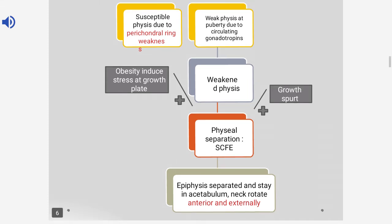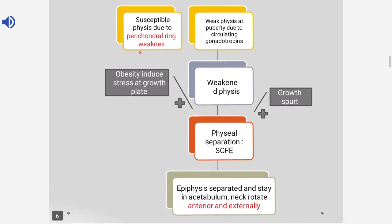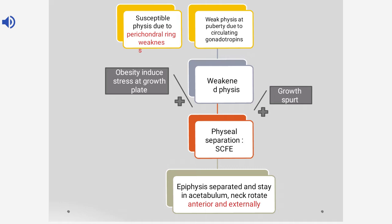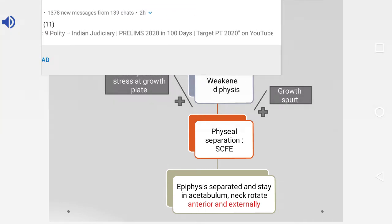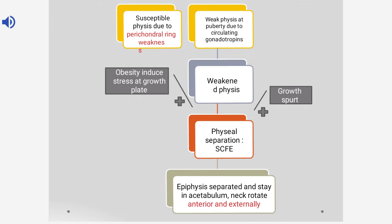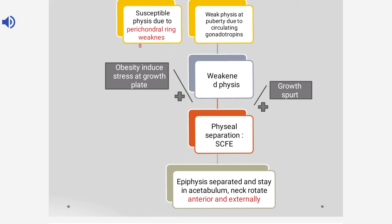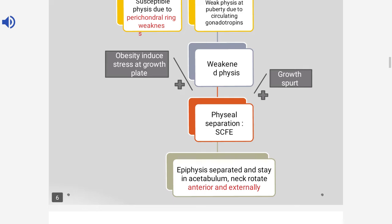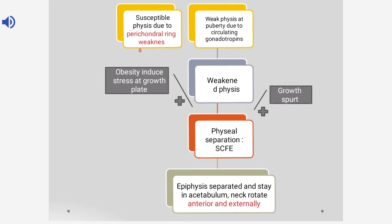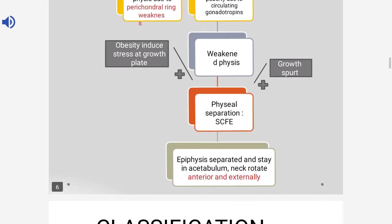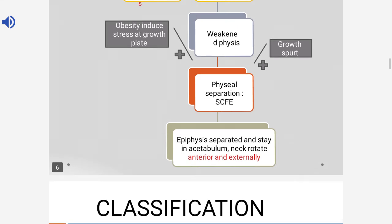It is more common in males than females because testosterone makes the physis weak, whereas estrogen makes the physis slightly stronger. Obesity also induces stress at the growth plate, which also makes the physis weak. This leads to physis separation causing SCFE. The epiphysis is separated and stays in the acetabulum, but the neck rotates anteriorly and externally — that's why it's called a misnomer, as physis separation occurs at the physeal region.